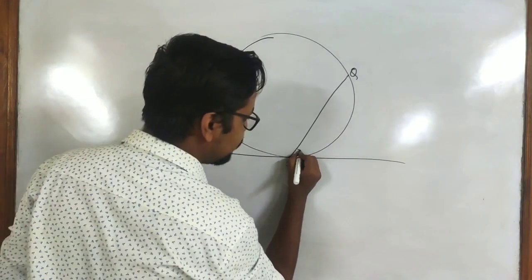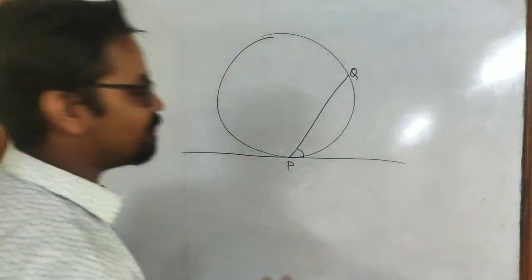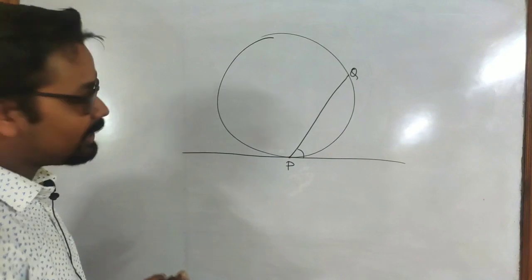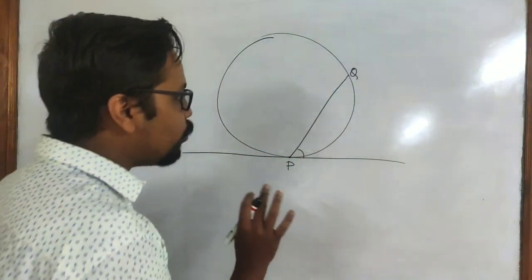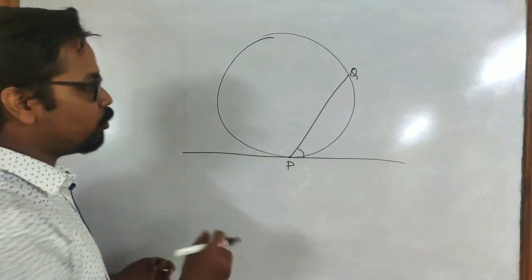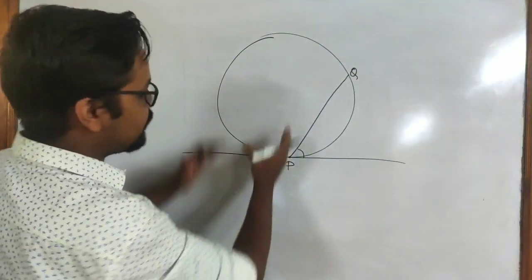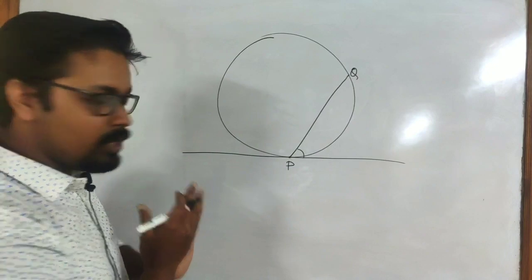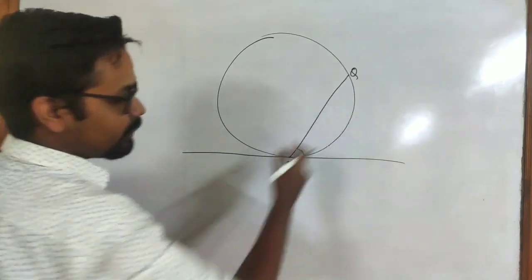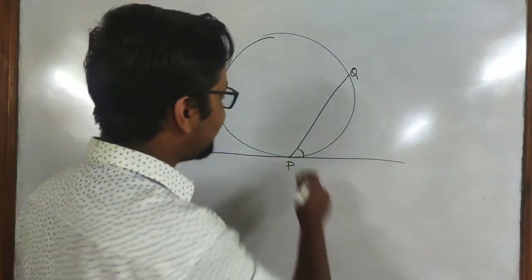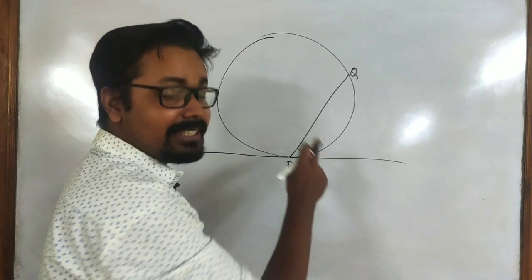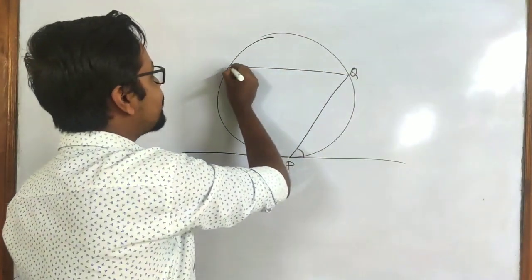The angle formed by the chord with the tangent at the point of contact will be equal to the angle formed by the same chord in the opposite segment. A chord divides the circle into two segments. Since we are considering one angle with the tangent, the angle in the opposite segment is the one on the other side of the chord.